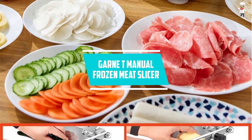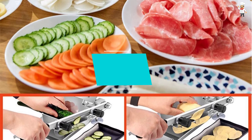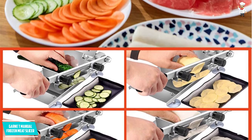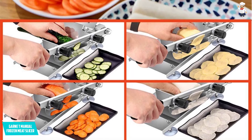At number 2, Garnet T-Manual Frozen Meat Slicer. This is a manual meat slicer that has been made with quality stainless steel making it easy to clean after use. It also guarantees to stand the test of time owing to its quality construction materials.